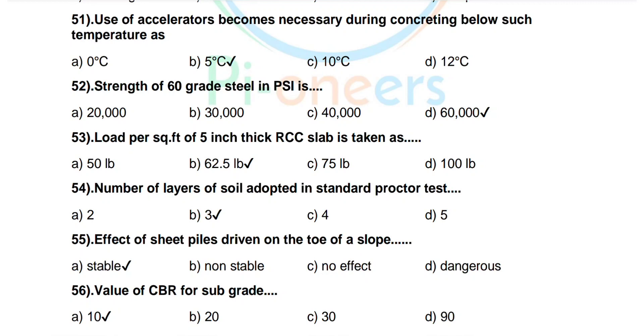Question number 56: Value of CBR for subgrade. Options are 10, 20, 30, 90. Correct answer not clearly stated.